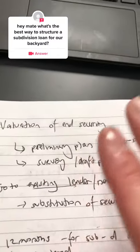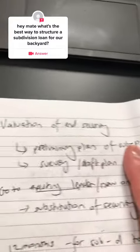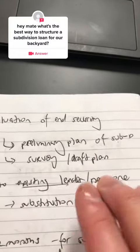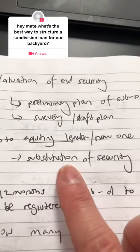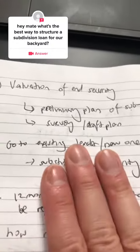This means you need to speak to surveyors and get a preliminary plan of subdivision, get a survey and a draft plan. Now step two is you go to your existing lender or new one and propose that you want to do a substitution of security if you're going to the existing lender.